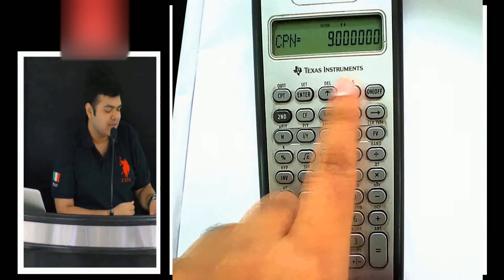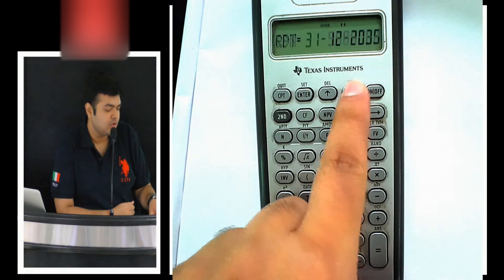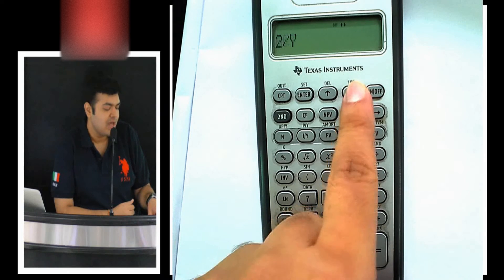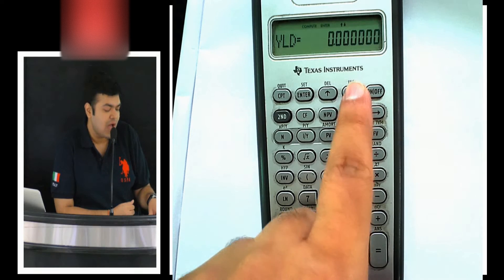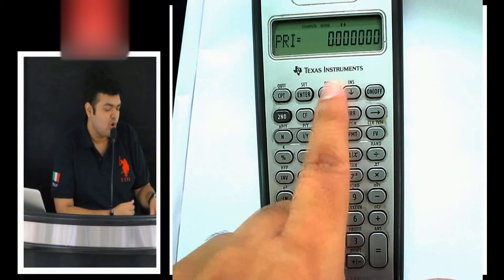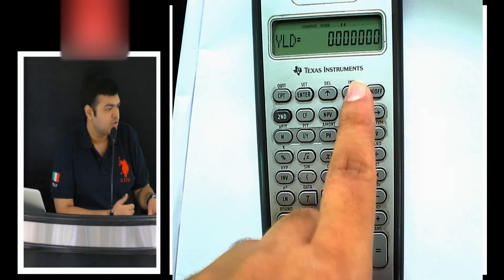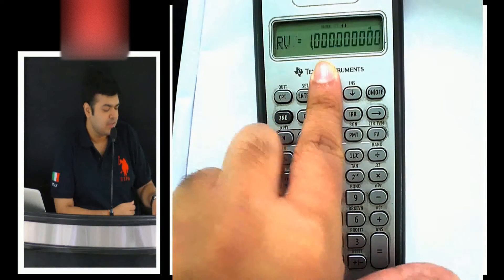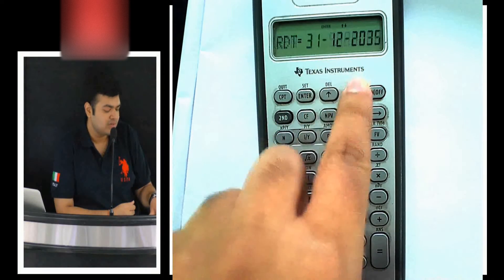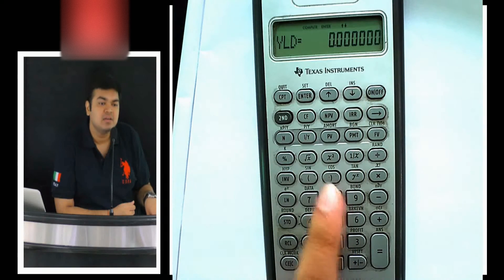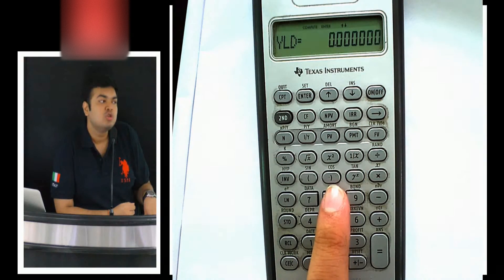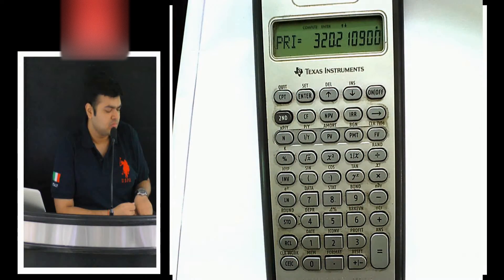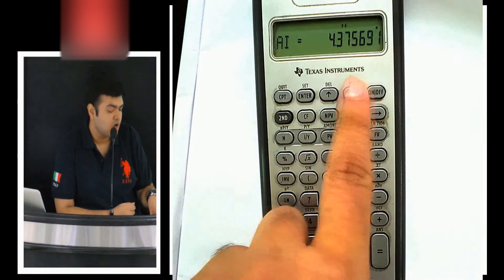Settlement date today, coupon is this, redemption date is this, recoverable amount, actual days, semi-annual. Either you put yield and get the price, or put the price and get the yield. Let's say I put 8 percent as the yield. My bond value should be higher than 1000. Enter, compute.